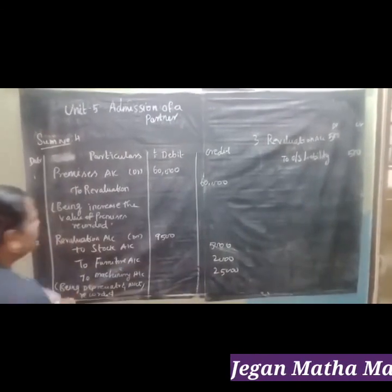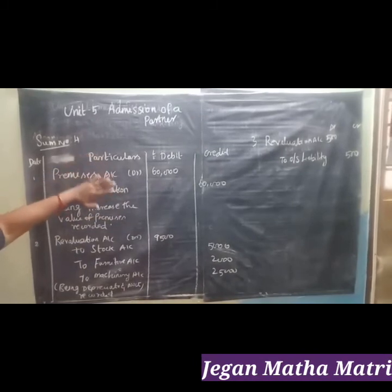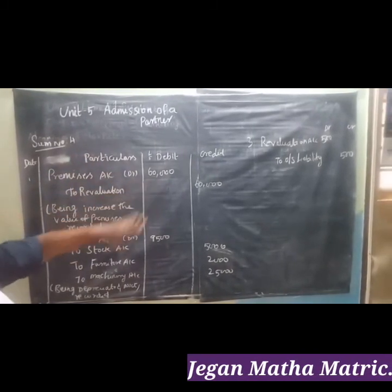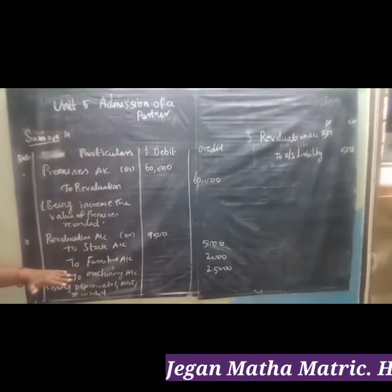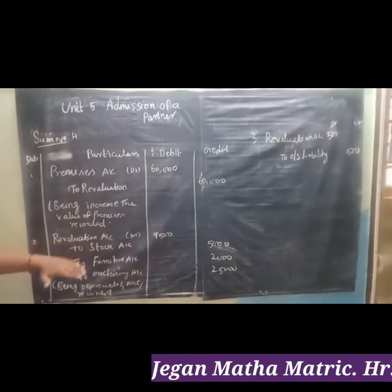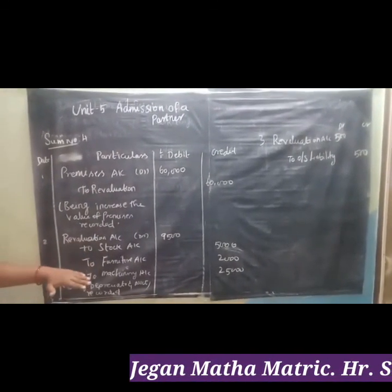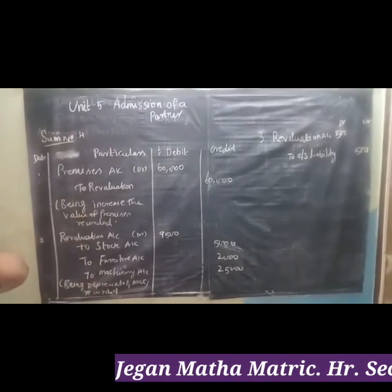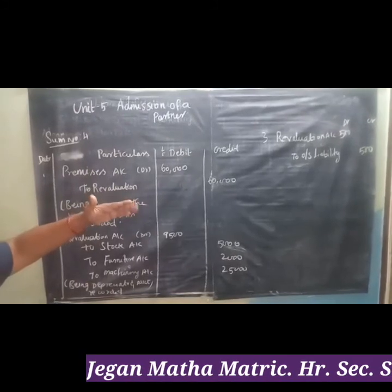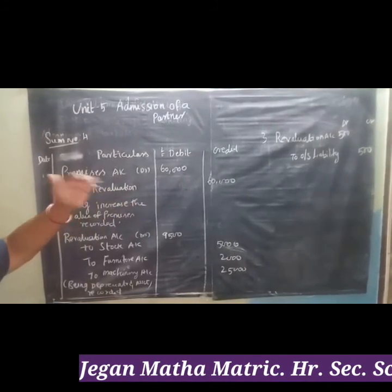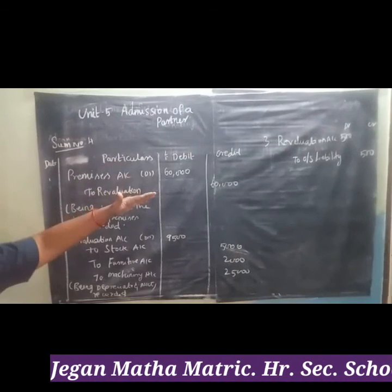So to summarize: increase in the value of asset means Revaluation credit side — Premises Account Dr to Revaluation, 60,000. Decrease in the value of asset means loss — Revaluation Account Dr to Stock Account, to Furniture Account, to Machinery Account. Third adjustment: outstanding liability provided, liability increased means loss — Revaluation Account Dr to Outstanding Liability.